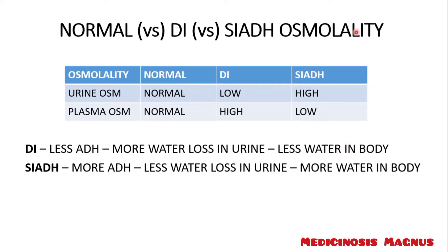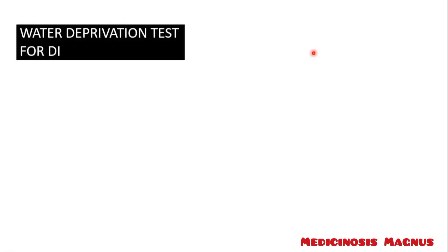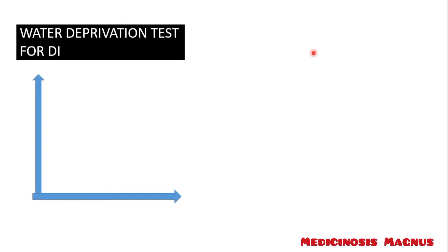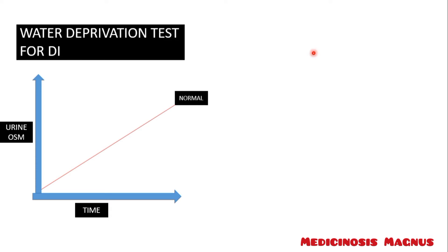This is how you differentiate between diabetes insipidus and SIADH. Now, if you suspect a patient has diabetes insipidus, you perform a water deprivation test. Let's draw a graph with urine osmolality on the y-axis and time on the x-axis. What you do is not give any water to the patient.